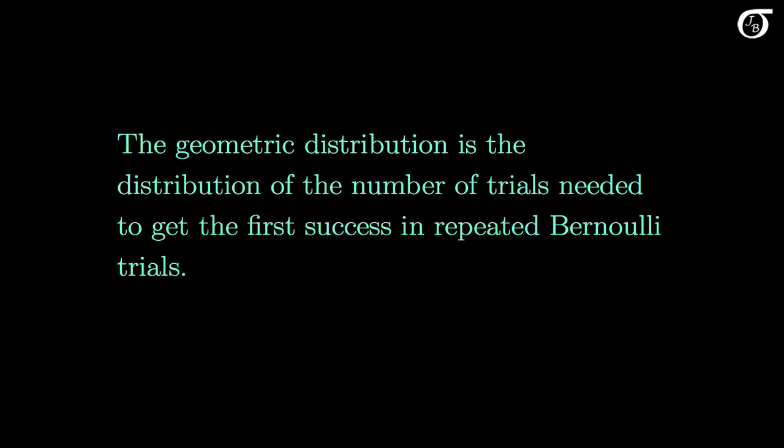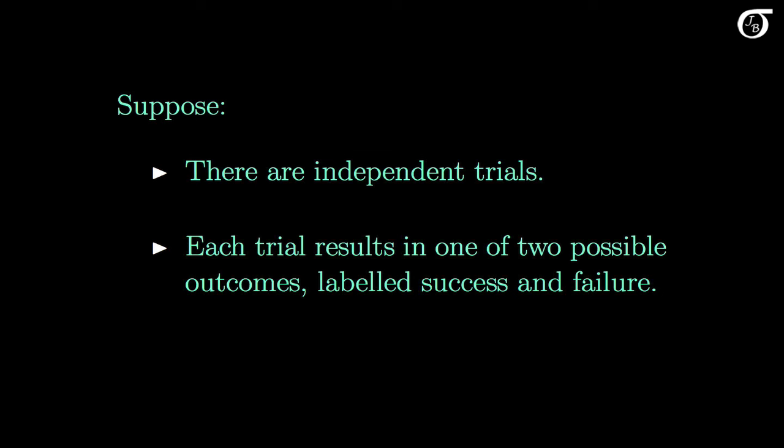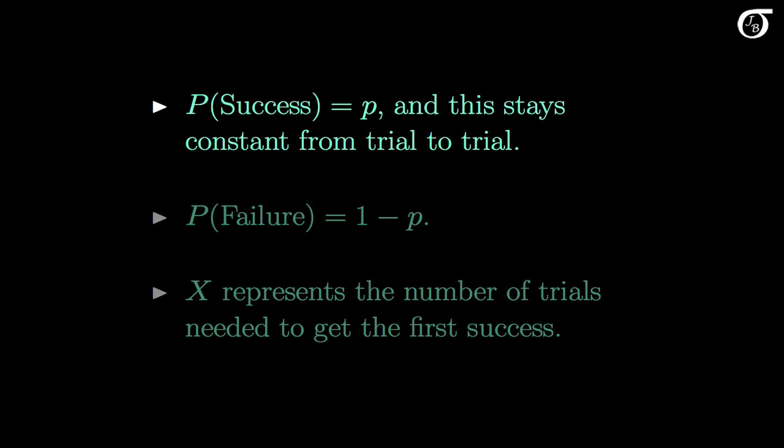Let's look in greater detail at what is meant by repeated independent Bernoulli trials. Suppose there are independent trials, and each trial results in one of two possible mutually exclusive outcomes, which we'll label as success and failure. On any individual trial the probability of success is p, and this stays constant from trial to trial. Failure is the complement of success, so the probability of failure on any individual trial is 1-p.